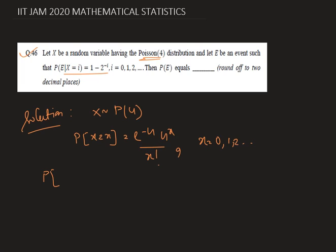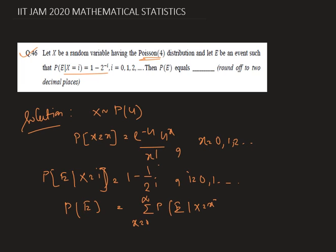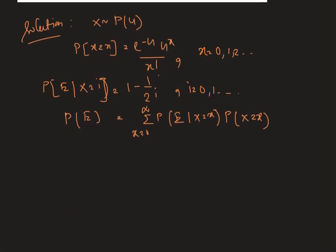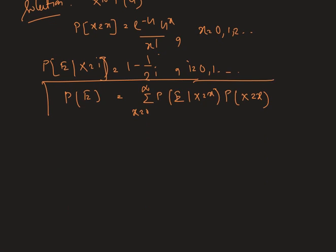Now given that probability of E given X equals to i is 1 minus 1 by 2 to the power i, where i equals 0, 1, 2, and so on. Probability of E can be written as sum over x equals 0 to infinity of probability of E given X equals x, multiplied by probability of X equals x. This is by the definition of total probability.